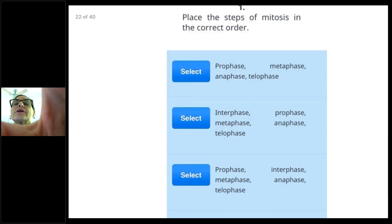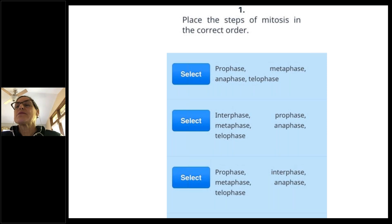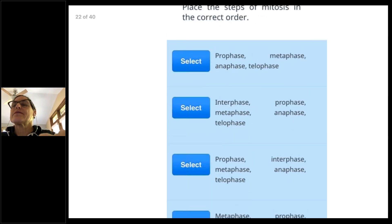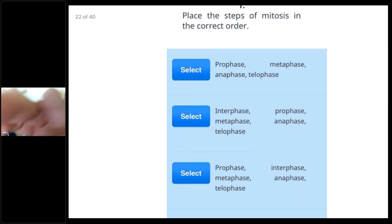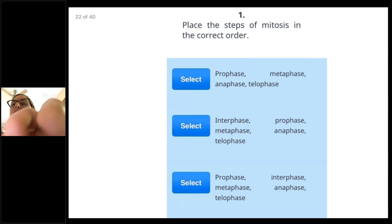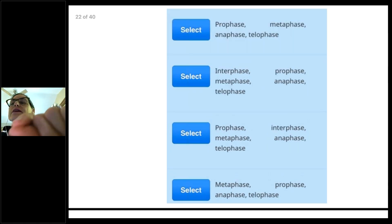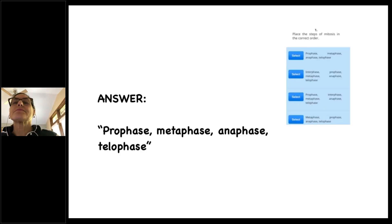Here's a quick review: place the steps of mitosis in the correct order. The answer is prophase, metaphase, anaphase, and telophase. Remember PMAT!